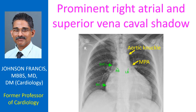Chest X-ray PA view showing prominent right atrial and superior venacaval shadow along with mild cardiomegaly. Right atrial enlargement is suggested by the rightward shift of the right cardiac border. The superior venacaval shadow can be traced upwards from the upper part of the right atrial contour.